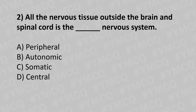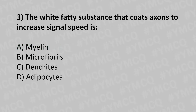Let's move to our second question. All the nervous tissue outside the brain and the spinal cord is the dash nervous system. Option A: peripheral. Option B: autonomic. Option C: somatic. Option D: central. And the answer is option A: peripheral nervous system.